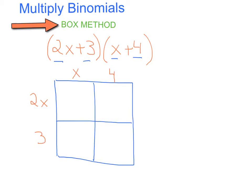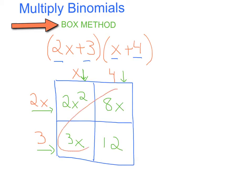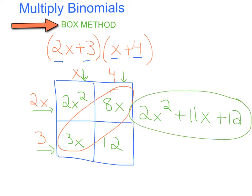To fill in the box, we're going to treat this like a multiplication table. For the first box: 2x times x is 2x squared, and then 2x times 4 is 8x. The bottom left box: 3 times x is 3x, and then that last box, 3 times 4 is 12. Now you want to combine like terms within your box, which in most cases will always be on that diagonal. So my final answer is 2x squared, plus 3x plus 8x is 11x, and then plus 12 as my constant. When you multiply two linear binomials by each other you should result in a quadratic trinomial.